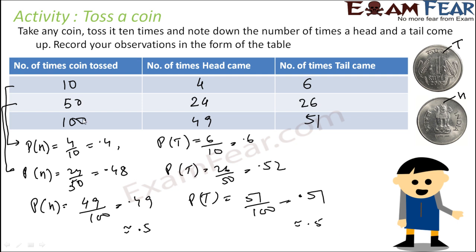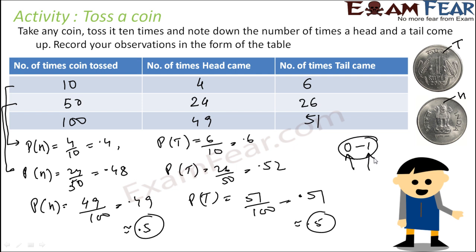So if you take more data — for example, if you perform the experiment 1000 times, 10,000 times — you will see that as the number of tosses increases, the value of these fractions nears 0.5. Thus, I can say that the probability of getting a head is 0.5 and the probability of getting a tail is 0.5. Note that these values are between 0 and 1. A probability of 0 means it will not happen; 1 means it is a sure shot. 0.5 is nothing but 50%.